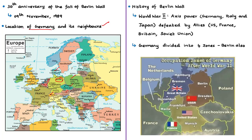Germany, Italy, and Japan — known as the Axis powers — were defeated in World War Two by the Allied forces of the US, France, Britain, and Soviet Union. After the war, Germany was divided into four zones under the occupation of the Allies. Berlin was located within the Soviet zone but was also split among the four powers.